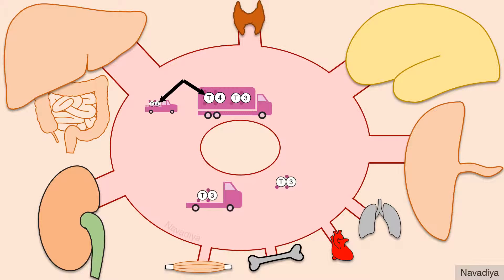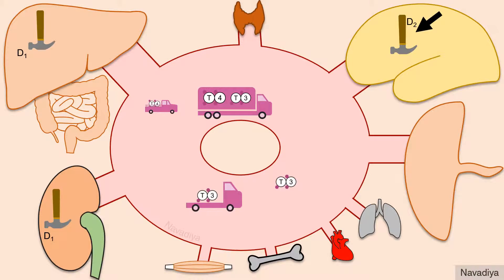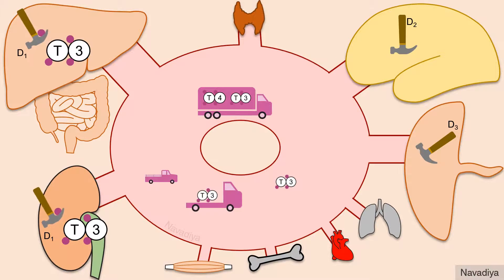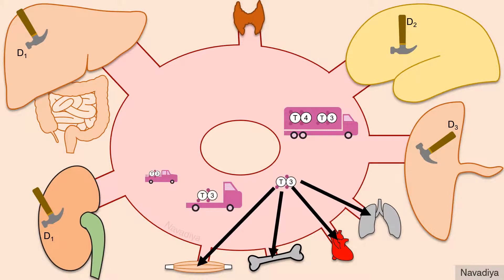There are three different types of deiodinase enzymes for this: D1, D2, and D3. Liver and kidney are the main sites of deiodination and they have D1. It removes one iodine from the outer ring and thus converts T4 into T3. This peripheral deiodination also produces RT3, but it's inactive. This T3 is then released into circulation and utilized by various tissues.